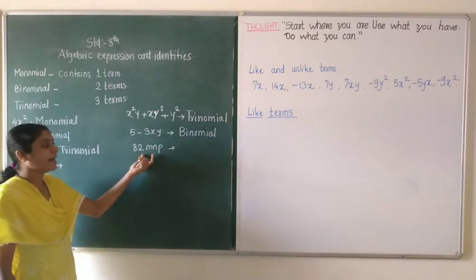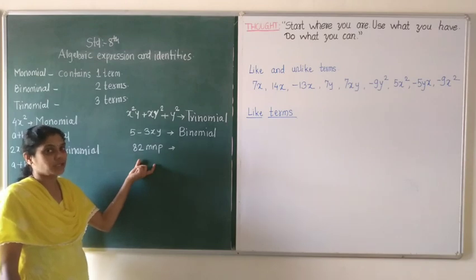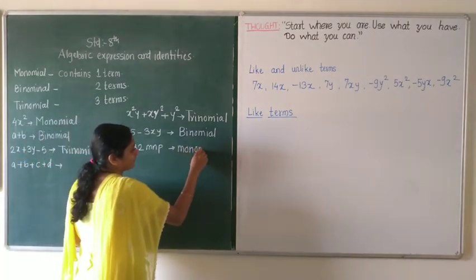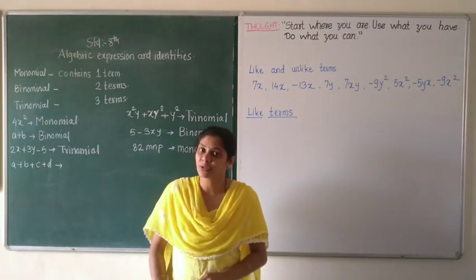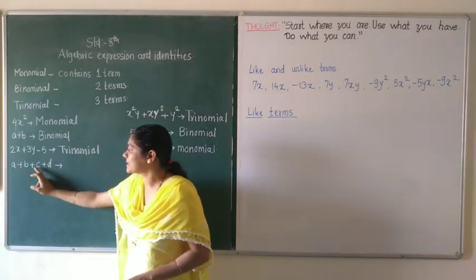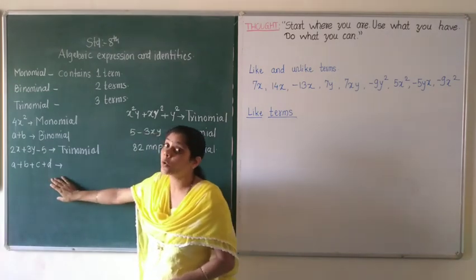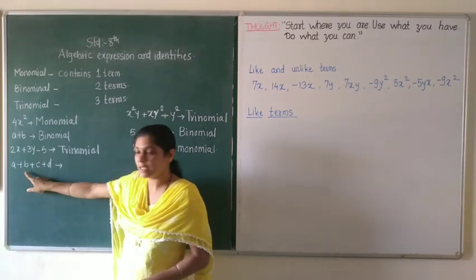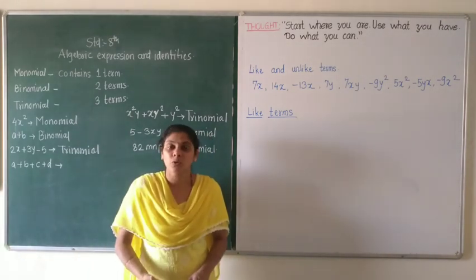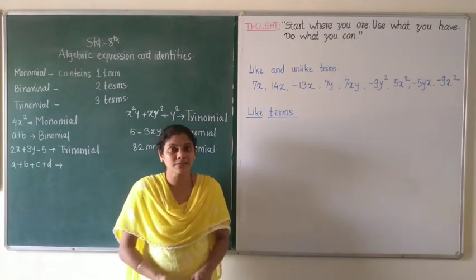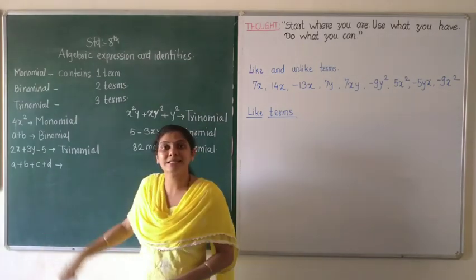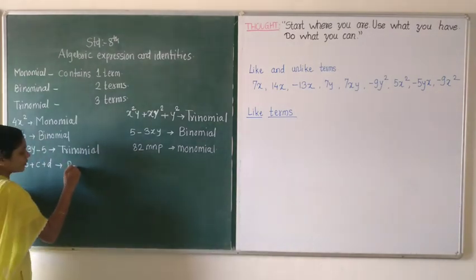The next is 82mlp. There is no mathematical operation like subtraction or addition, so it contains only one term — it is a monomial. Now you can see there is one more expression we have to classify: a plus b plus c plus d. You can see there are four terms: a, b, c, and d. More than three terms are there. So the word for that expression is polynomial, meaning many terms. So it is a polynomial.